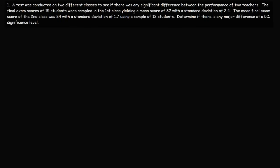In this video, we're going to work on some hypothesis tests and problems with two sample means. A test was conducted on two different classes to see if there was any significant difference between the performance of two teachers. The final exam scores of 15 students were sampled in the first class, yielding a mean score of 82 with a standard deviation of 2.4. The mean final exam score of the second class was 84 with a standard deviation of 1.7, using a sample of 12 students. Determine if there is any major difference at the 5% significance level.